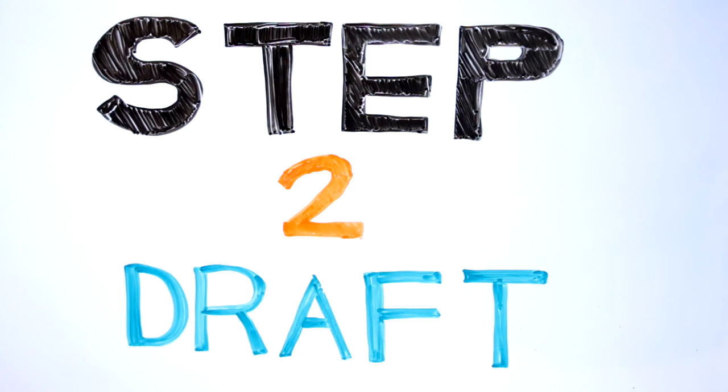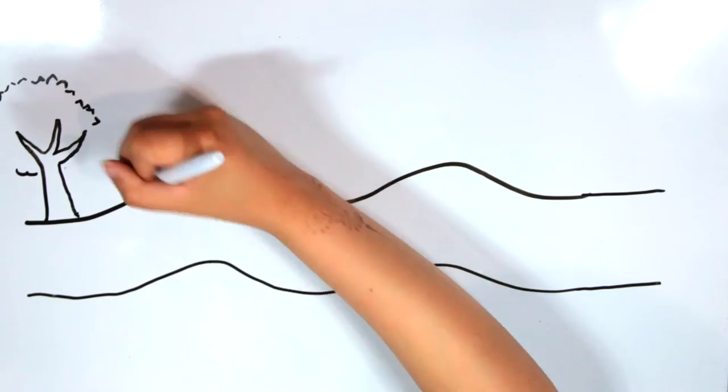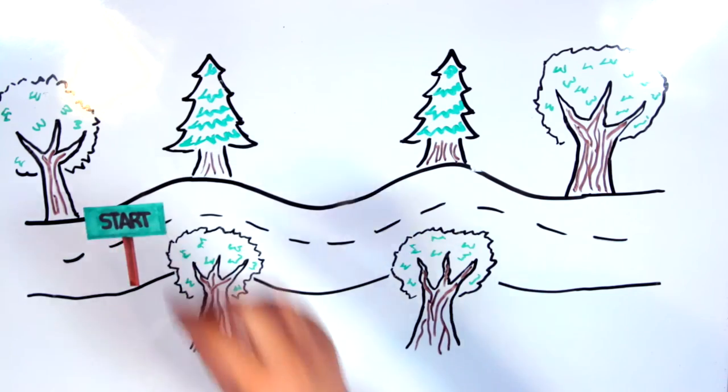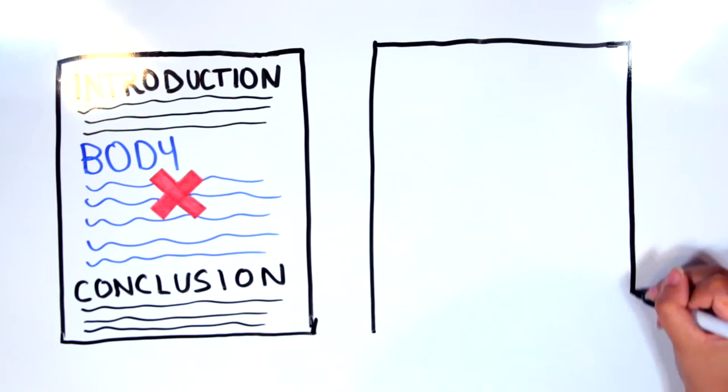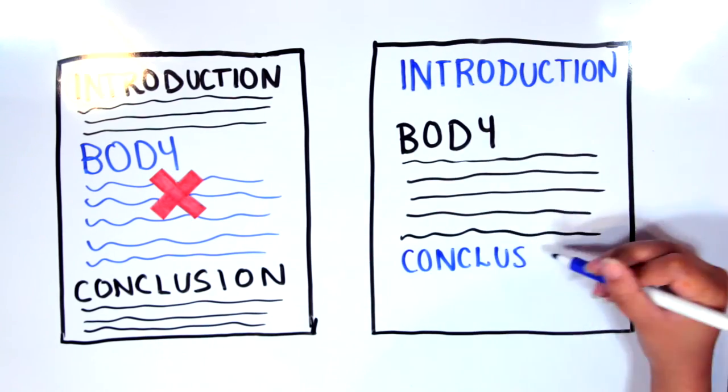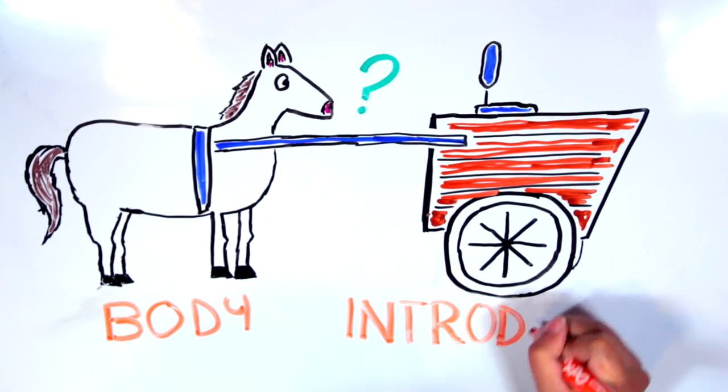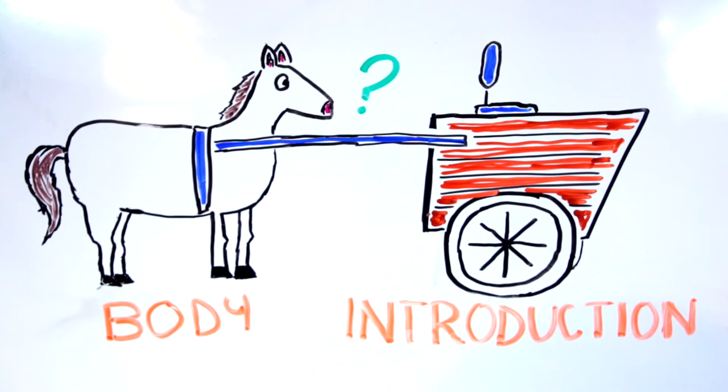Step 2: Draft. Using the outline you've created, you can begin to write the first draft of your paper. Start at the point that makes the most sense to you. In fact, it's usually easiest to save the introduction and conclusion for last. These parts of the paper are usually the shortest. Their purpose is to give the paper a contextual basis which is difficult to accomplish until you've written the paper.